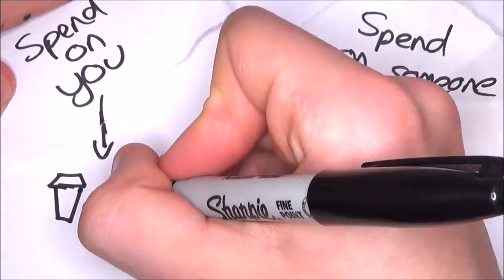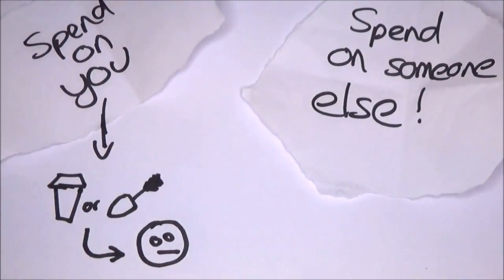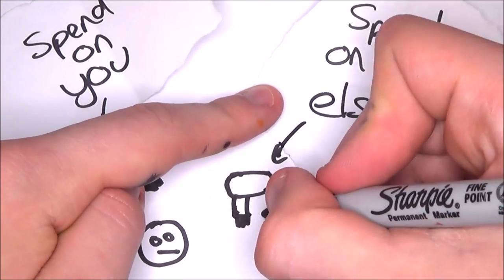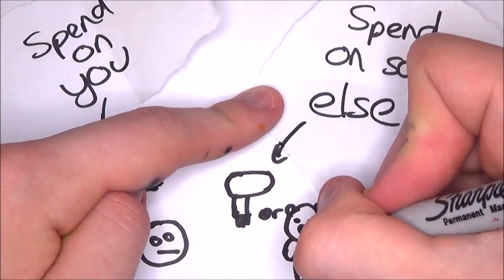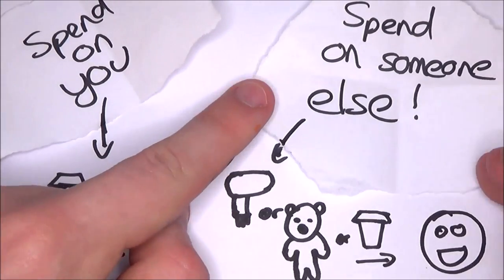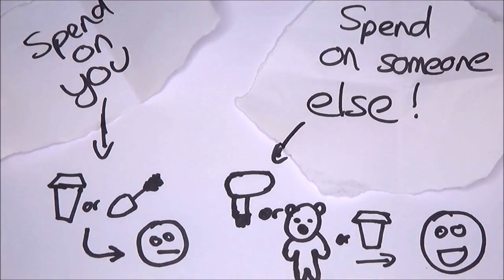So the people that bought something nice for themselves mainly bought coffee or makeup and they didn't really get any happier. However, the other half who bought scarves, teddies and more coffee but for other people, actually got happier.